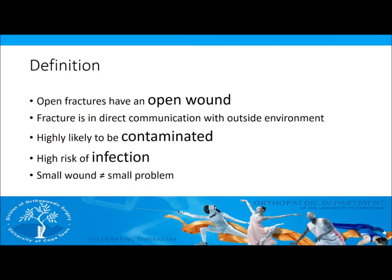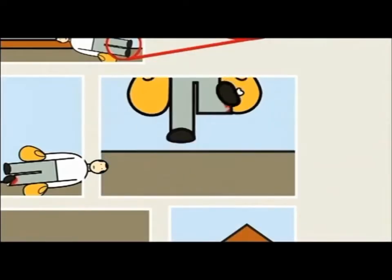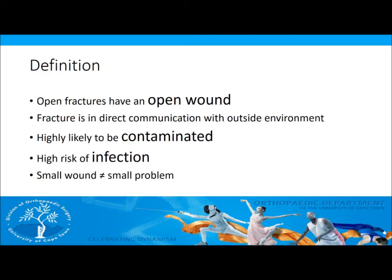An open fracture has an open wound or breach of skin so that the fracture is in direct communication with the outside world. The bone and skin are likely to be contaminated and are therefore at high risk of infection. Do not be deceived by small wounds — these can be associated with a large amount of soft tissue damage or foreign material which has been brought back into the wound.